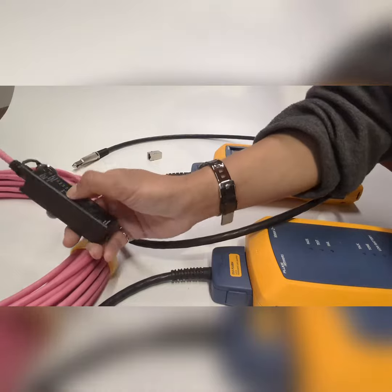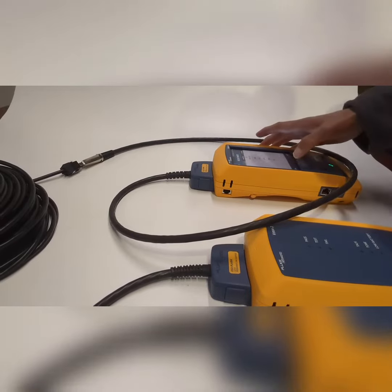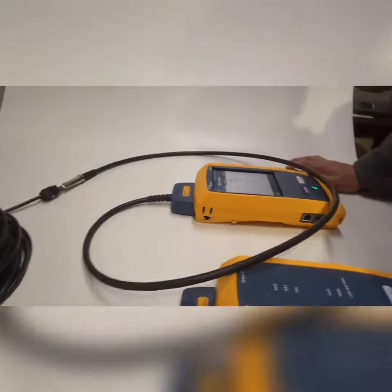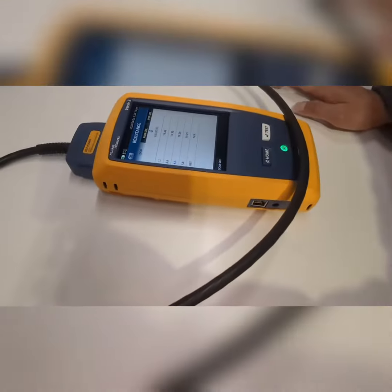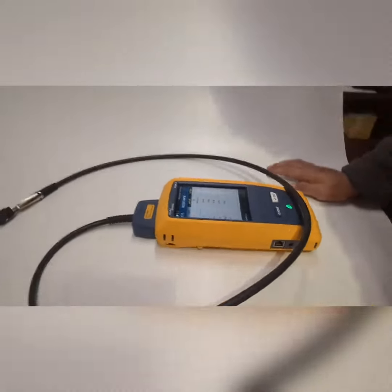We're testing a shorter spool of CCA cable. Now let's check the resistance value with the Fluke tester, and it's about 19, close to 20 ohms.